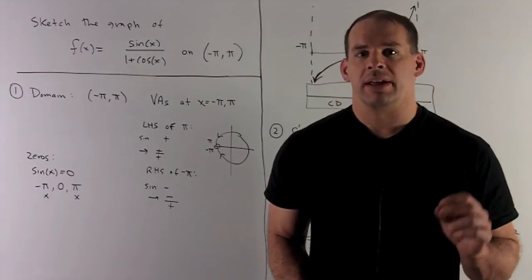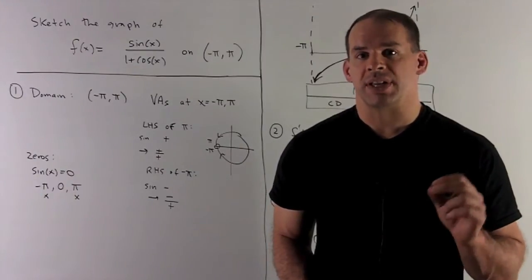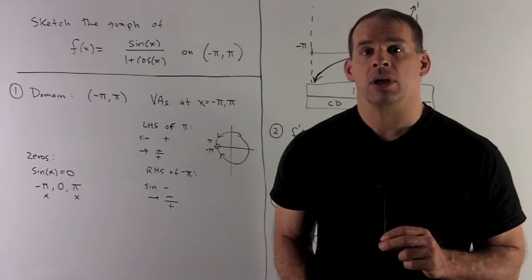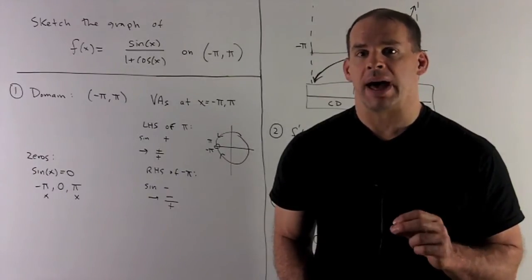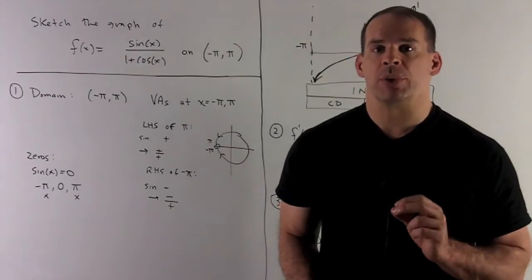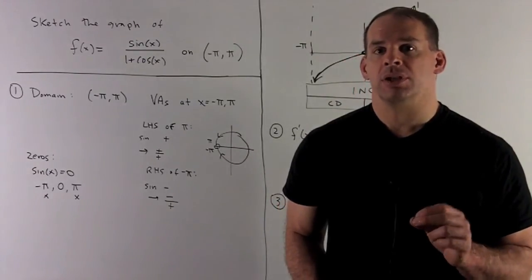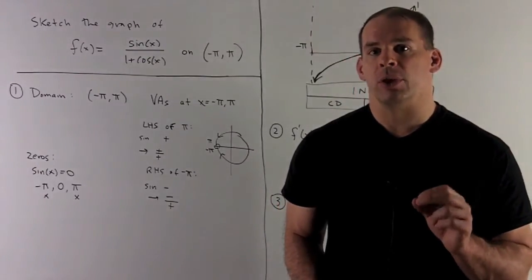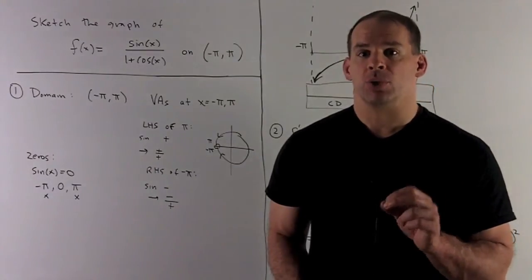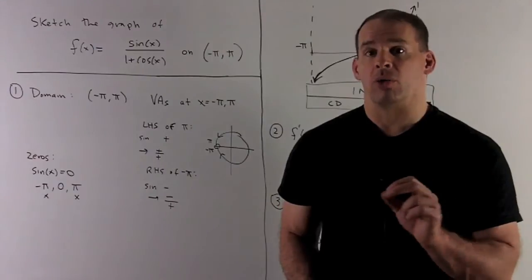Sketch the graph of f(x) = sin(x) / (1 + cos(x)) on the open interval minus pi to pi. The first issue we have to deal with is the domain. We're given the domain is minus pi to pi, so we might be worried about division by zero in our region.